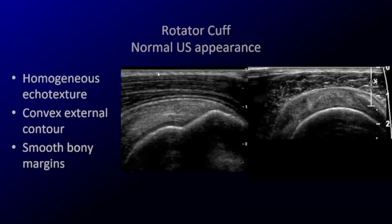There are about four layers in the shoulder. There's the skin and subcutaneous tissues — patients don't like it when you call it fat, but there is sometimes subcutaneous fat; this person has none. Then you have the deltoid, then the rotator cuff — in this case, this is the supraspinatus tendon — and then you have the humeral head.